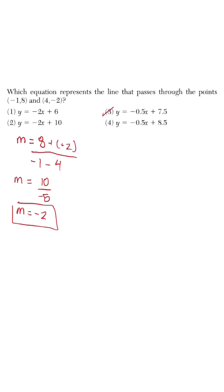So we could eliminate answer choice 3 and 4. And when we use the point-slope formula now and we substitute, we can determine what the equation will be of this line. So let's say we substitute and we use the ordered pair negative 1, 8.